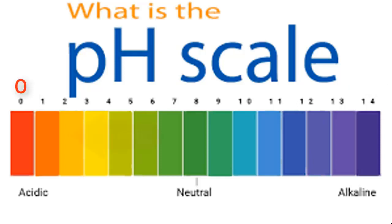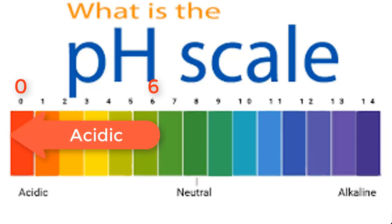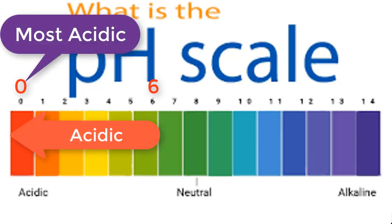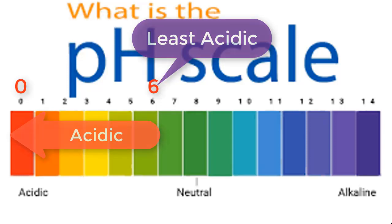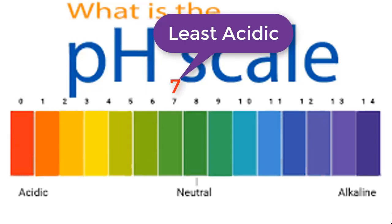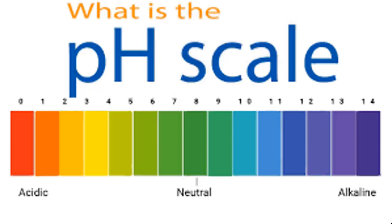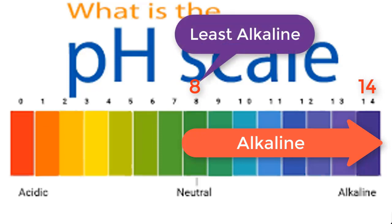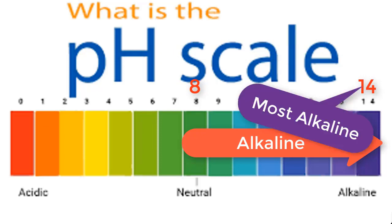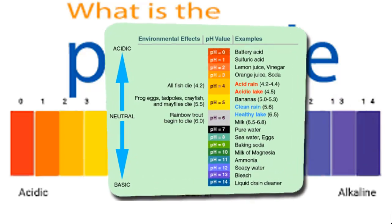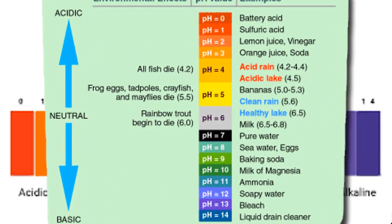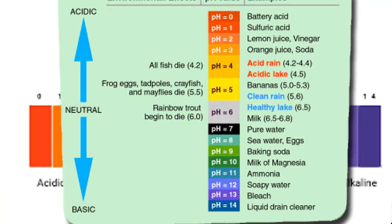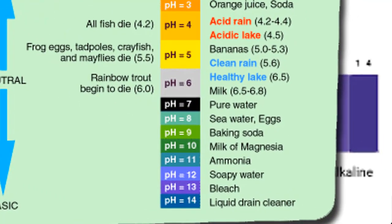Solutions that have pH between 0 and 6 are said to be acidic, with 0 as most acidic and 6 as least acidic. Solutions with pH 7 are said to be neutral — a very good example is water. Solutions with pH between 8 and 14 are said to be alkaline, with 8 as least alkaline and 14 as most alkaline. Now let's see the approximate pH values of common substances in our homes.